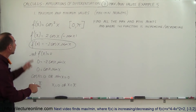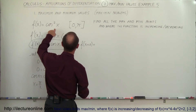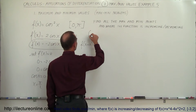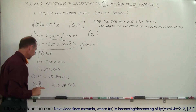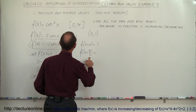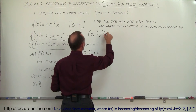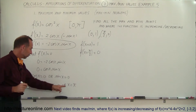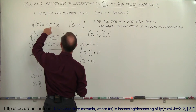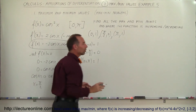Let's find those three critical points by plugging back into the original equation. When x = 0, cosine of 0 is 1, and 1 squared is 1, so the first point is (0, 1). When x = pi/2, cosine of pi/2 is 0, and 0 squared is 0, so the second point is (pi/2, 0). When x = pi, cosine of pi is negative one, and negative one squared gives positive one, so the third point is (pi, 1).